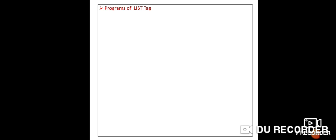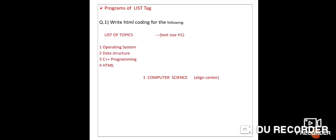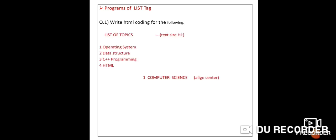Now let's look at programs based on list tags. The first example: write HTML coding for a 'List of Topics' page. It shows 'List of Topics' as an H1 heading, then a horizontal line, followed by: 1. Operating System, 2. Data Structure, 3. C++ Programming, 4. HTML. Then another horizontal line, and 'Computer Science' displayed centered, followed by another horizontal line.